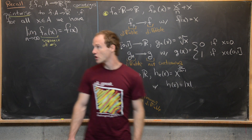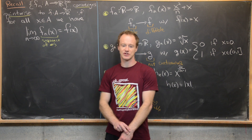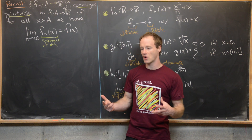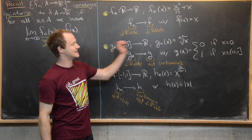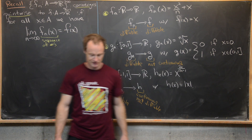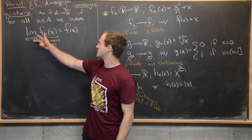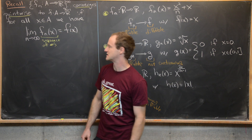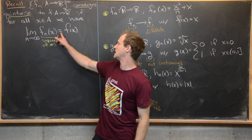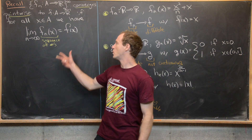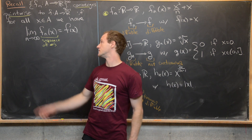So we want to tweak this notion of pointwise convergence to make it a little bit stronger, so that good behavior is maintained when we pass to a limit. Before we do that, we need to replace the limit statement — lim_{n→∞} f_n(x) = f(x) — with the precise epsilon-N definition of the limit.